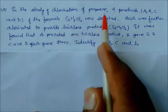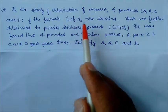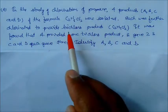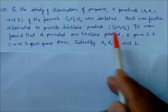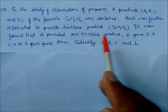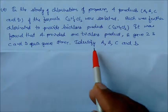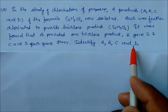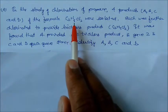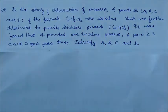In the chlorination of propane, four products A, B, C, and D with formula C₃H₆Cl were isolated. Each was further chlorinated to give a trichloro product. It was found that A gave one trichloro product, B gave two, and C and D each gave three. We need to identify A, B, C, and D.